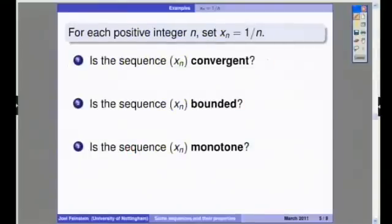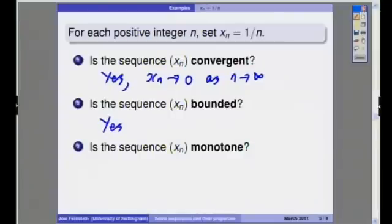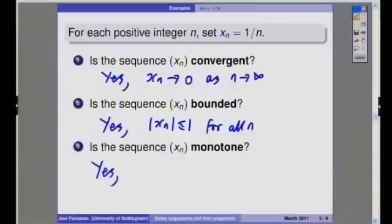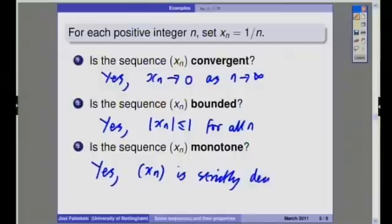Is this sequence convergent? Yes. In this case, the sequence converges to zero. xn tends to zero as n tends to infinity. Is the sequence bounded? Yes, because the modulus of xn is always less than or equal to one. And is it monotone? Yes, this time it's a strictly decreasing sequence, because each term is strictly less than the one before.